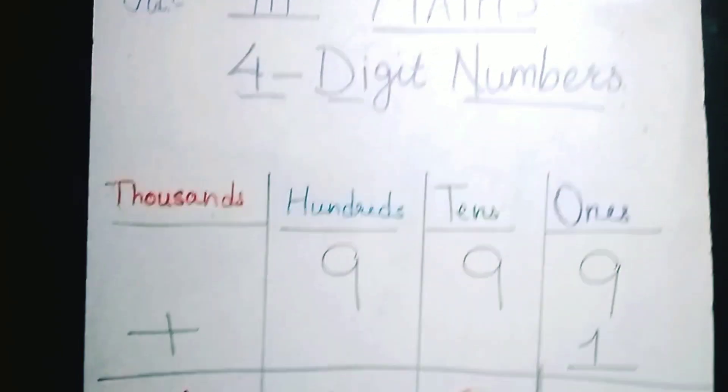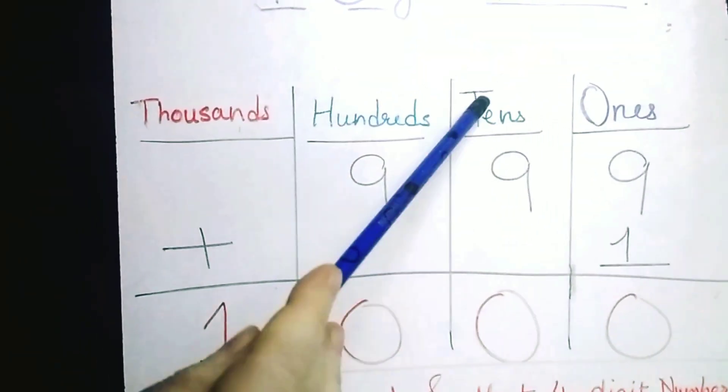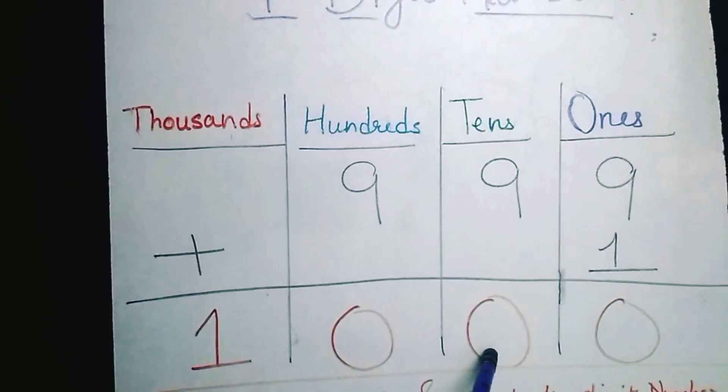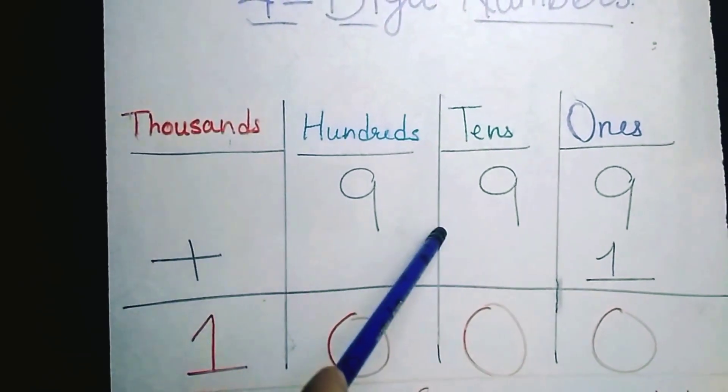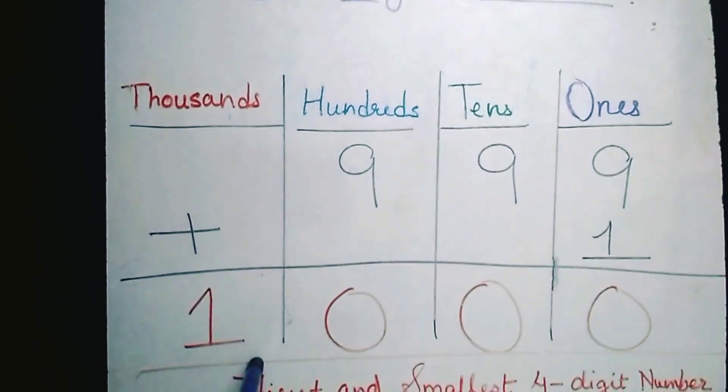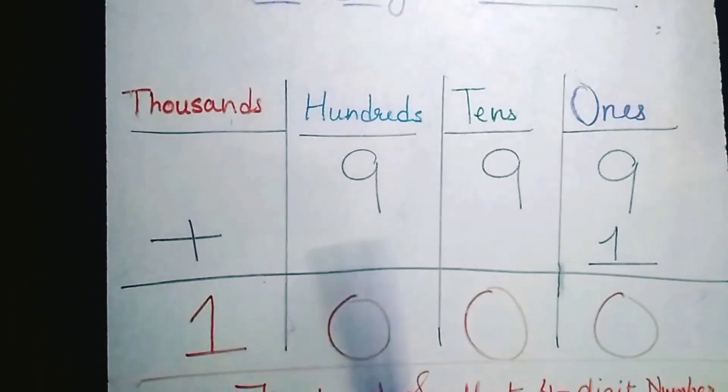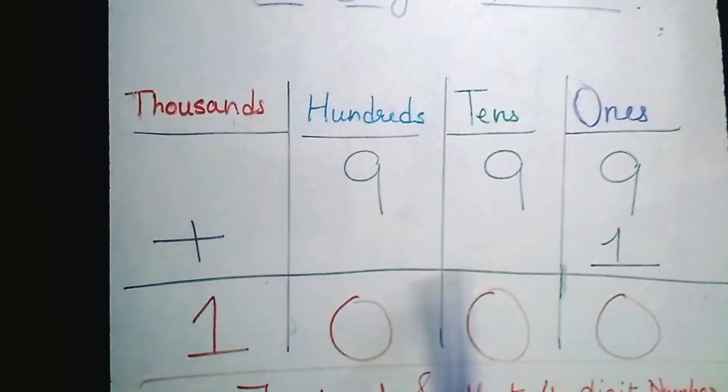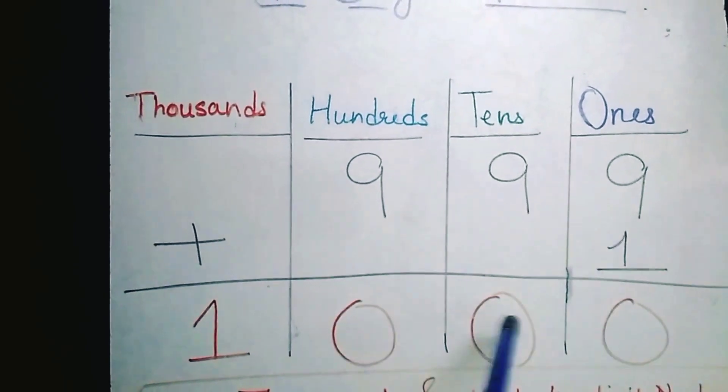So 9 plus 1, 10. 1 carry. 1 plus 9, 0. 1 carry. 9 plus 1, 0. 1 carry and 1. So 999 plus 1 equals 1, 0, 0, 0.